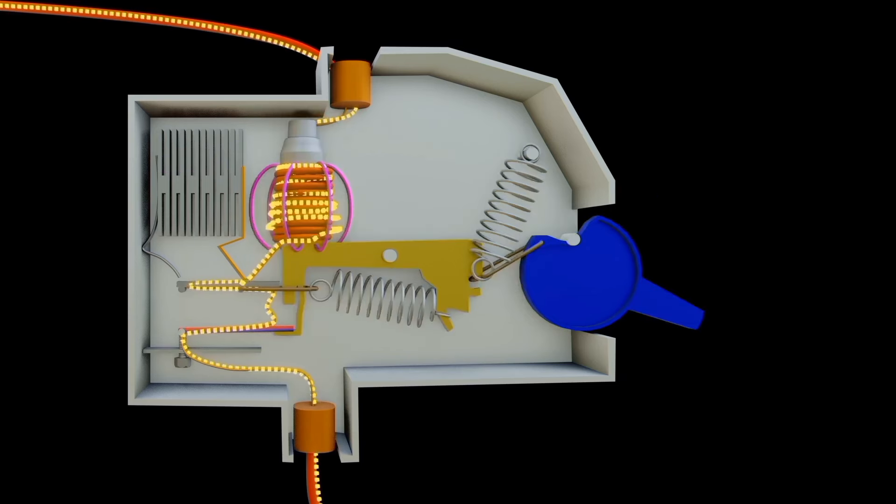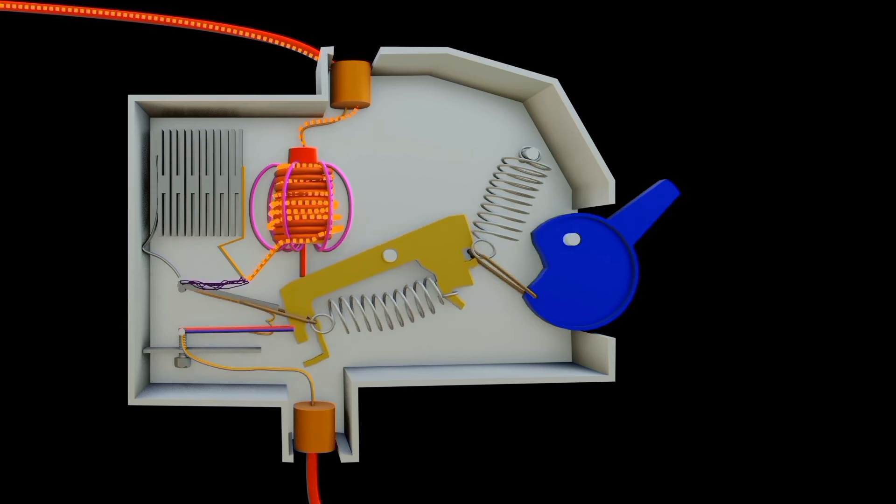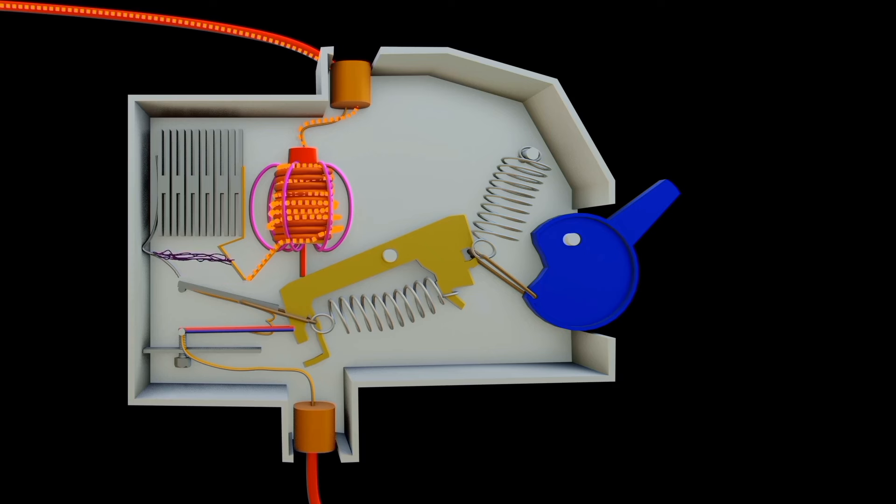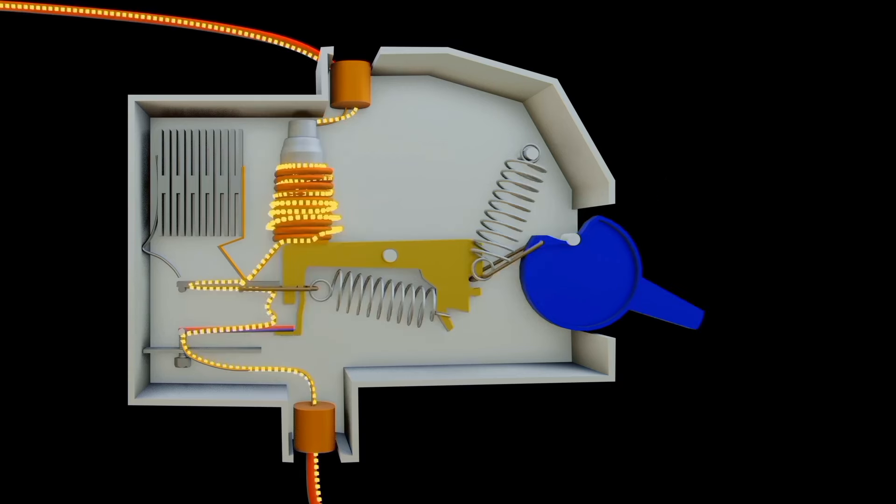Deionization: Certain materials within the arc chamber are chosen for their ability to deionize the surrounding air. Deionization helps in reducing the conductivity of the arc, making it easier to extinguish. Metallic plates and grids contain materials like copper or tungsten. They have good thermal conductivity and can withstand the high temperatures generated by the arc. Also ceramics or composite materials may be used since they have ability to withstand high temperatures and insulating capacity.